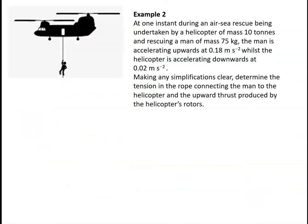Our second example considers an air-sea rescue. At one instant during an air-sea rescue being undertaken by a helicopter of mass 10 metric tonnes — that is 10,000 kilograms — the helicopter is rescuing a man of mass 75 kilograms. The man is accelerating upwards at 0.18 meters per second squared, whilst the helicopter is accelerating downwards at 0.02 meters per second squared. We need to determine the tension in the rope connecting the man to the helicopter and the upward thrust produced by the helicopter's rotors.